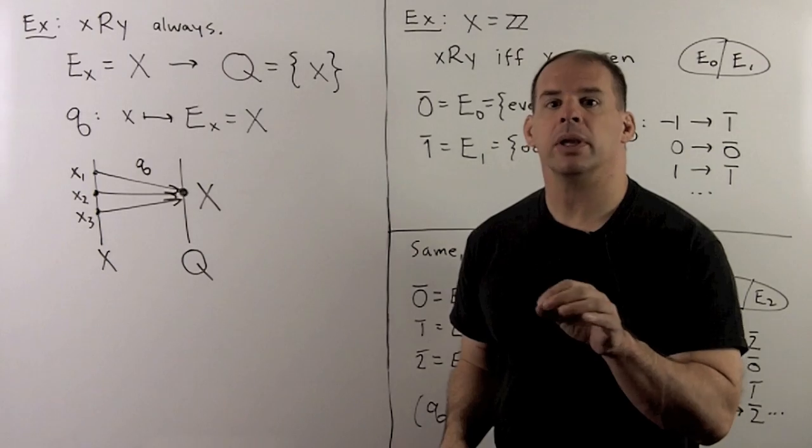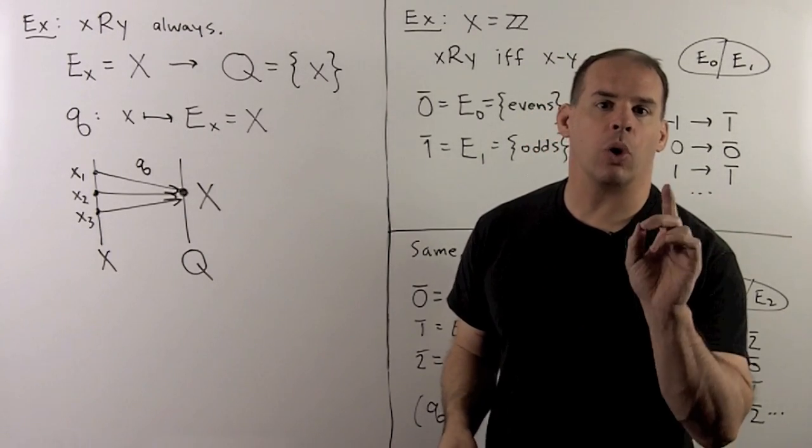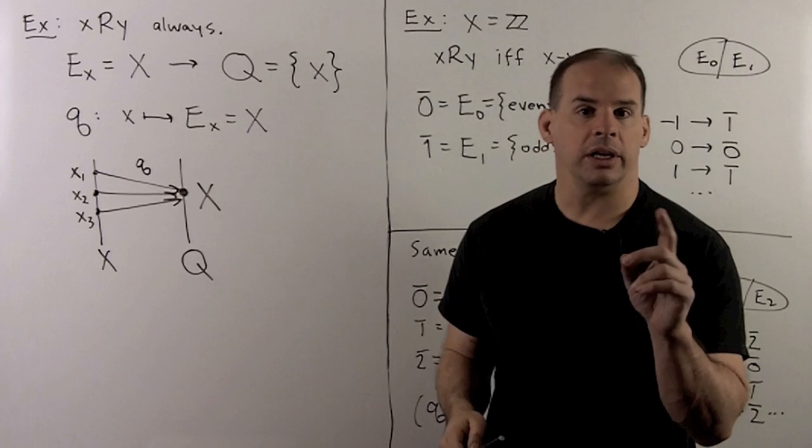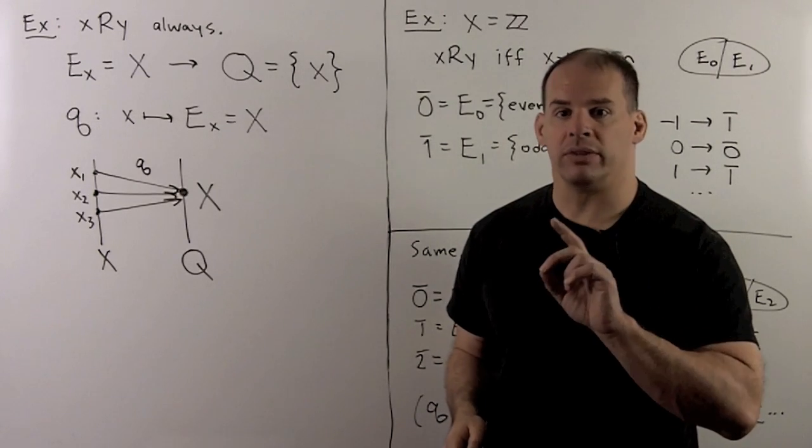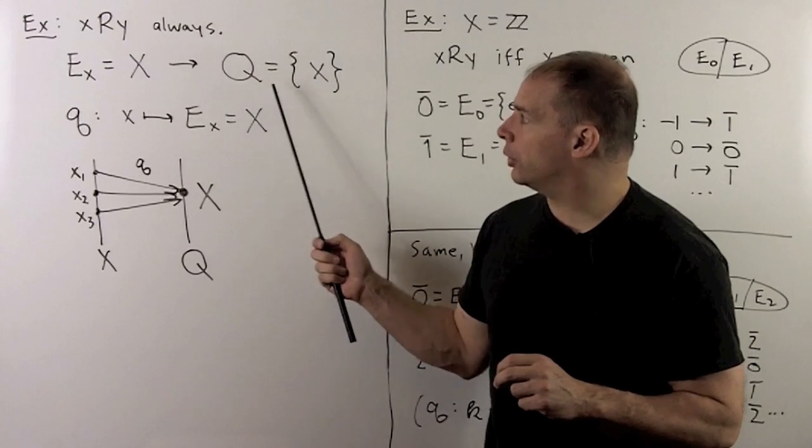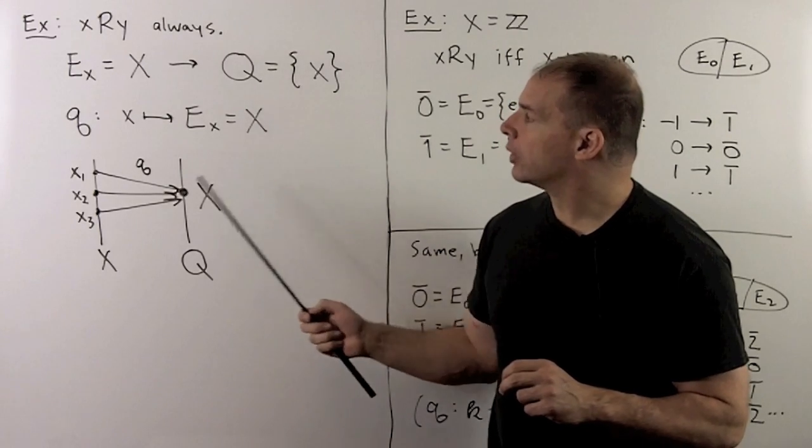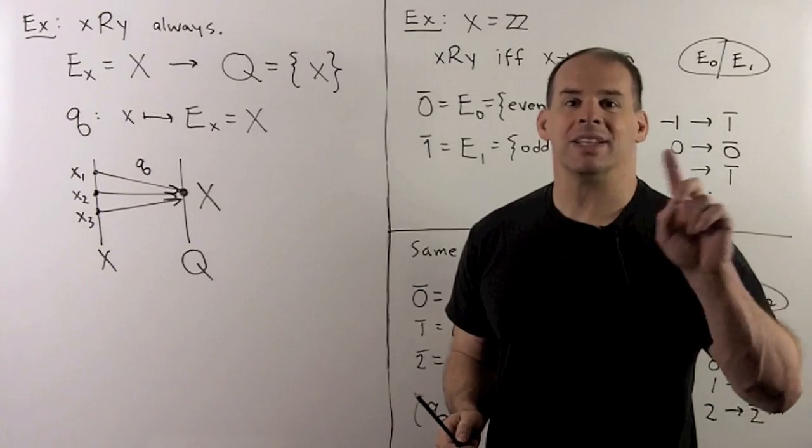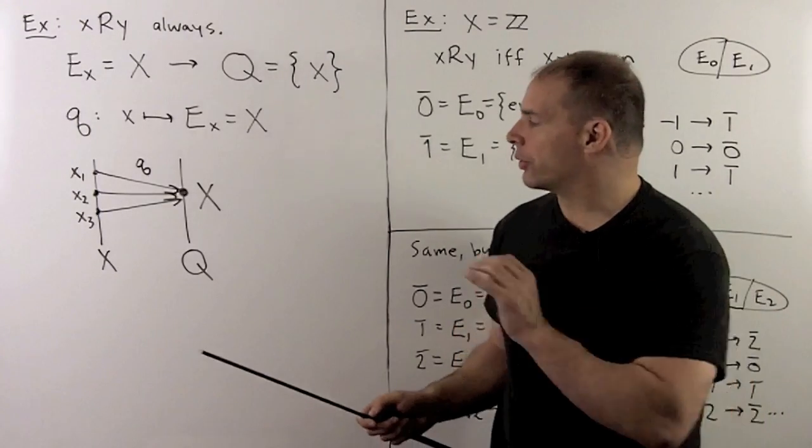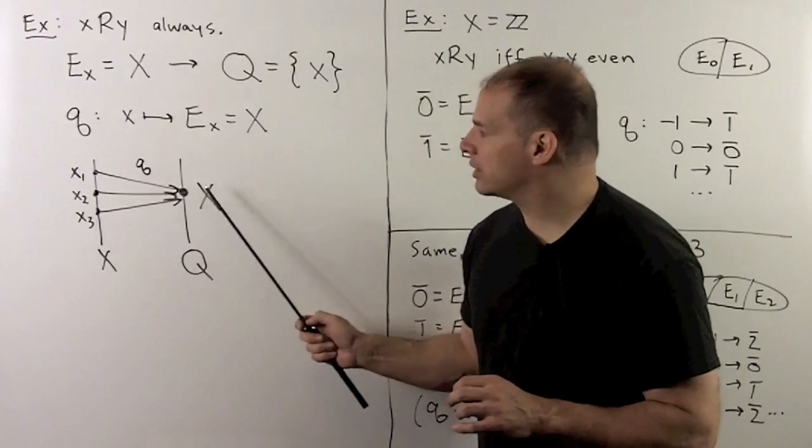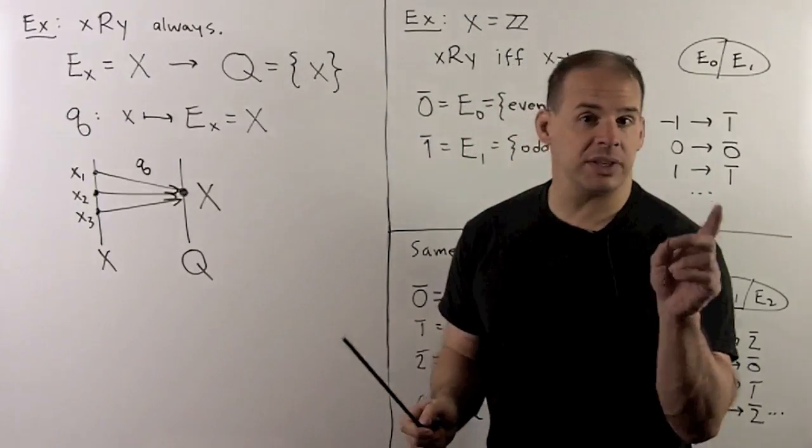At the other extreme, we have the equivalence relation where X and Y are always related. Here, we have one equivalence class, the set X itself. So, Q is going to have a single point for the quotient map. We're just going to send each element X to the set X. So, for our picture, what Q does, it just sends every point to this single point. And we've seen that picture before.